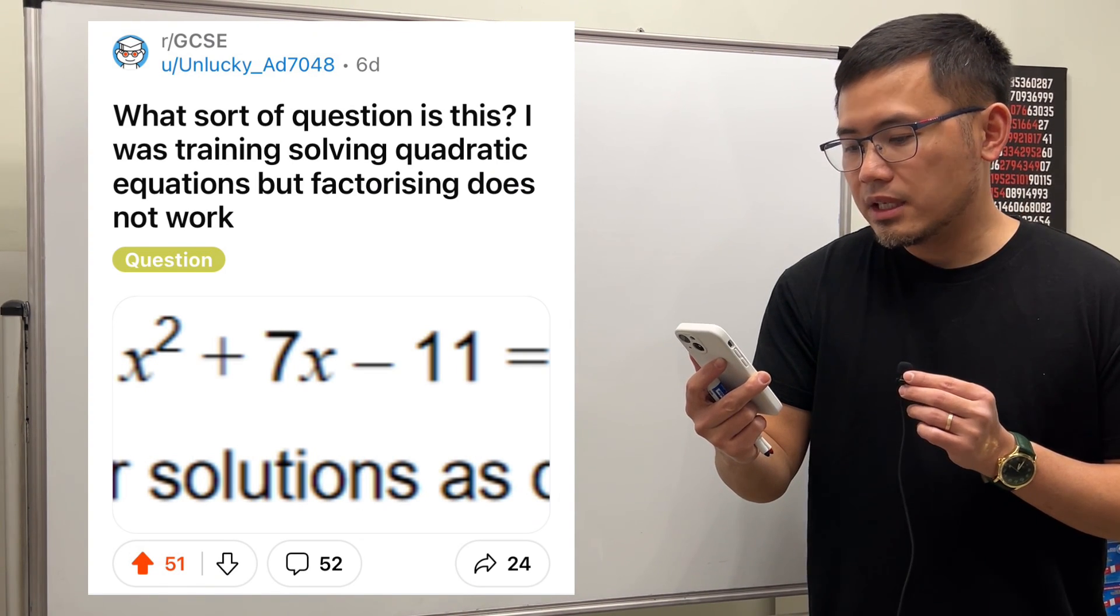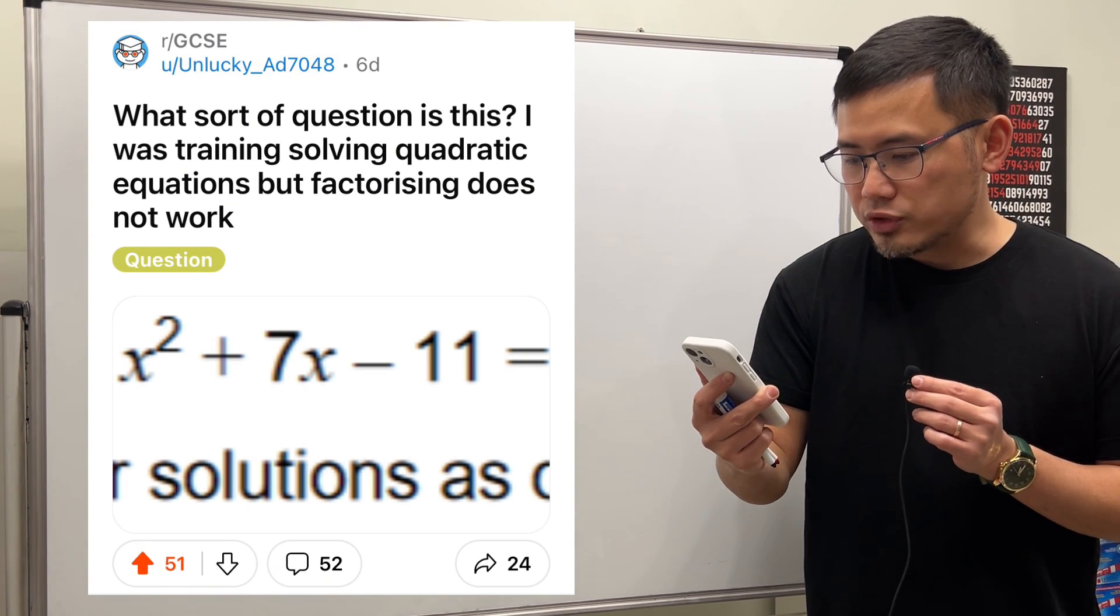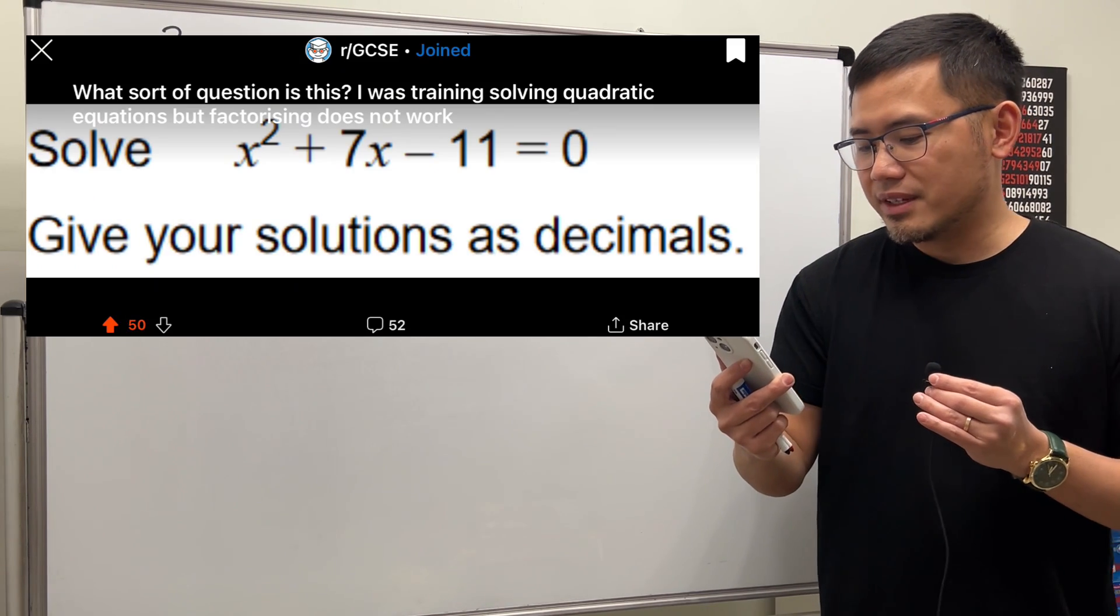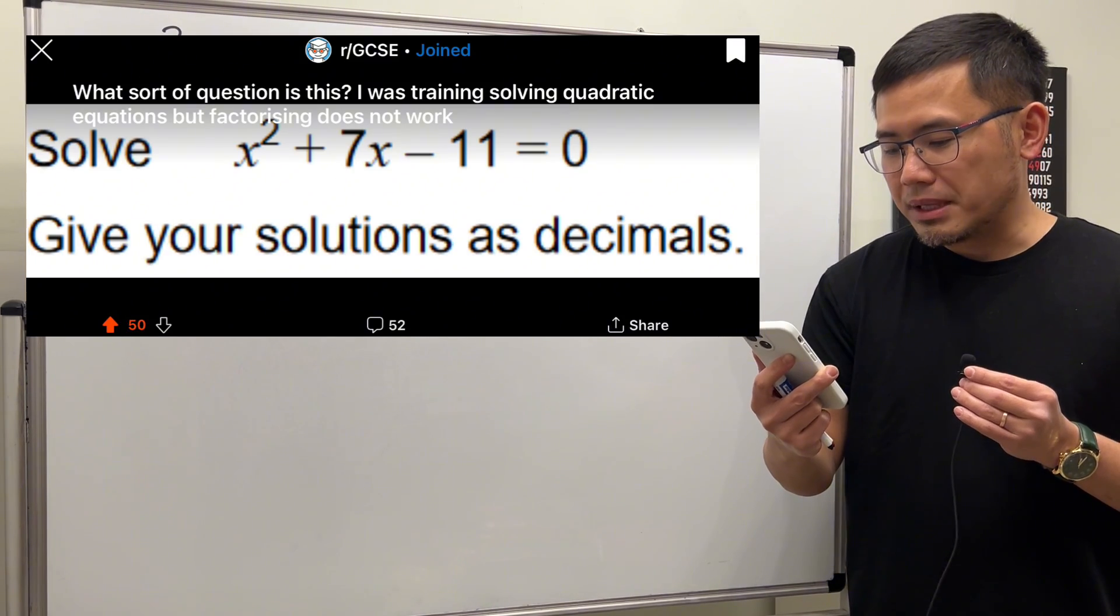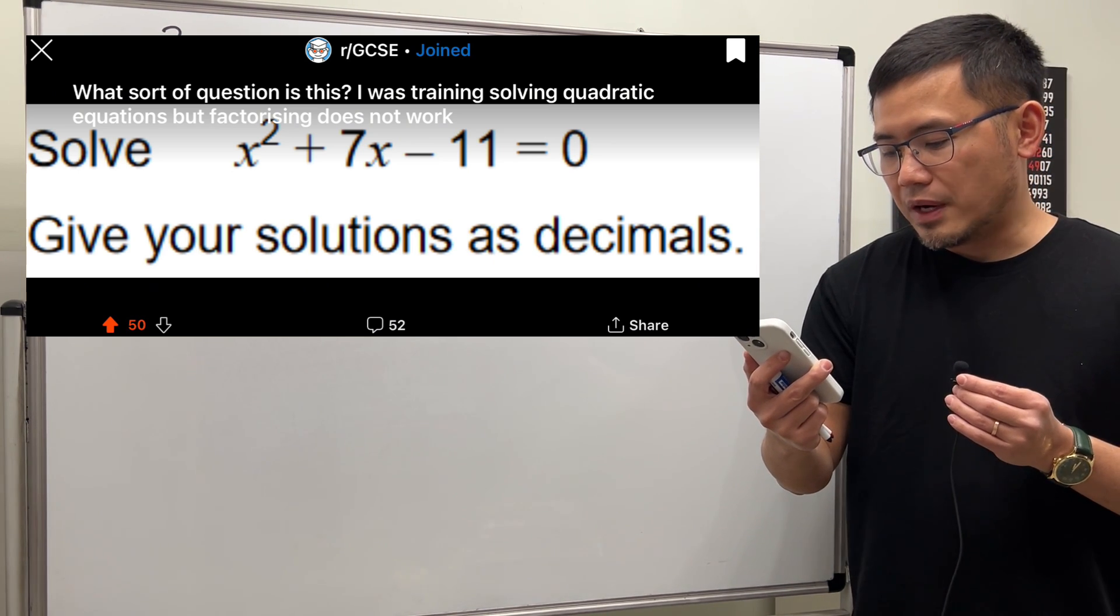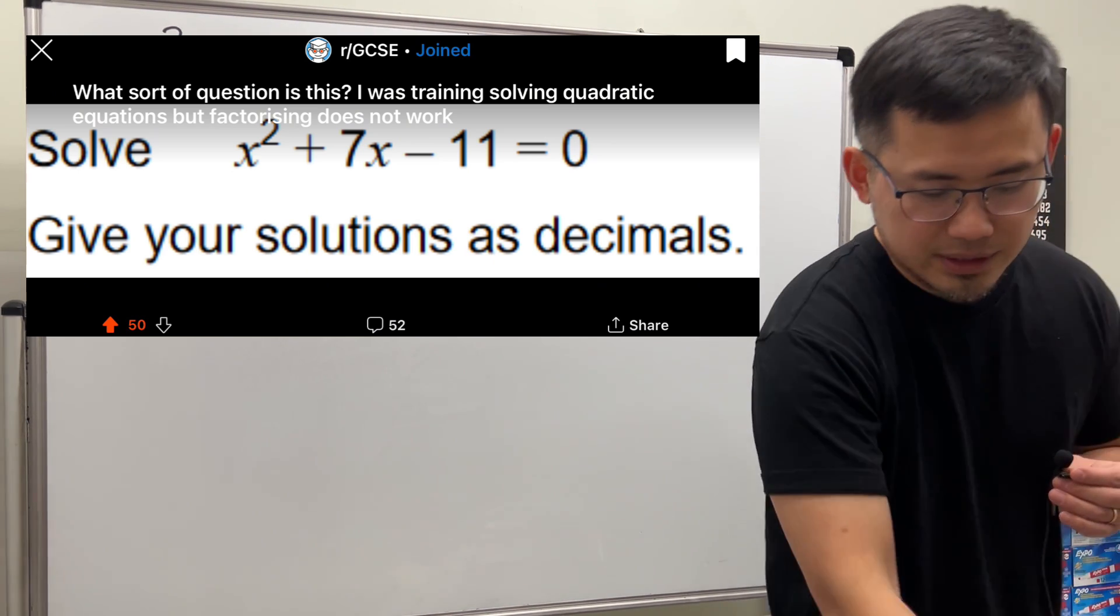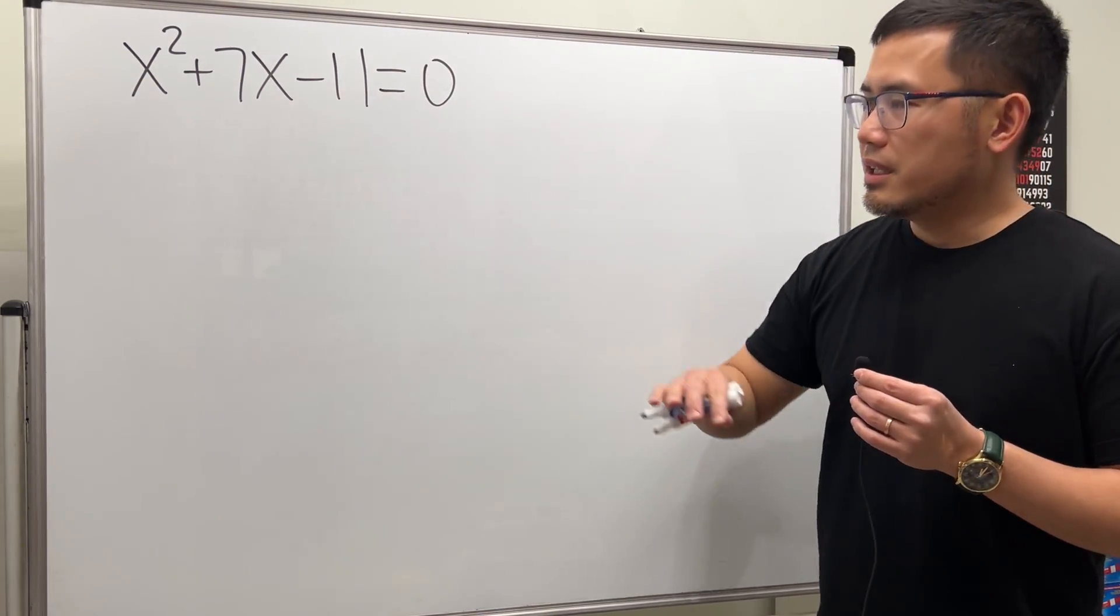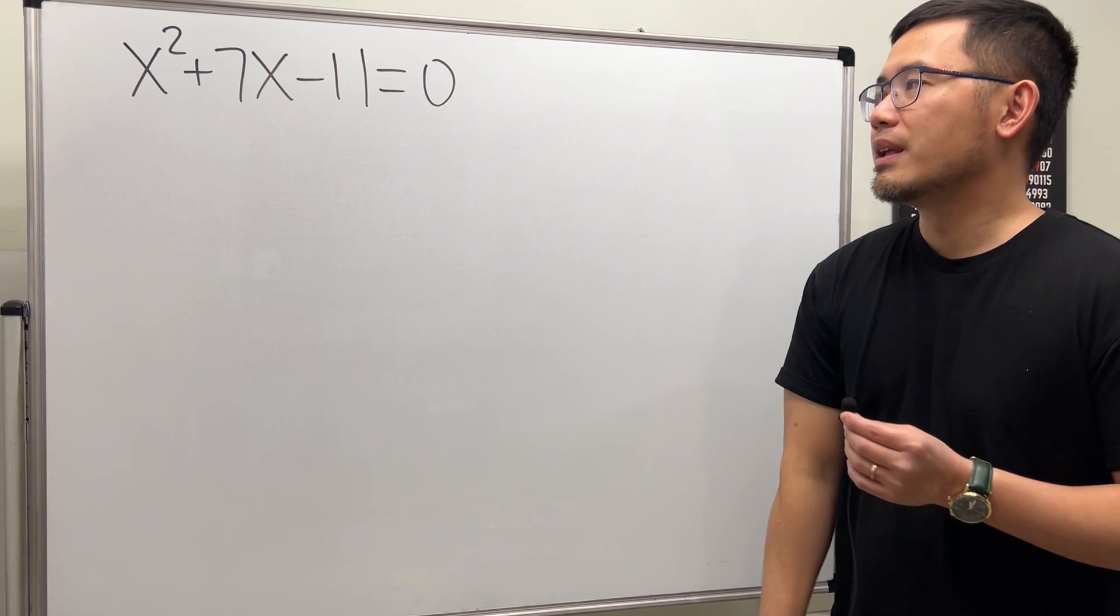What sort of question is this? I was training solving quadratic equations, but factoring does not work here. We have the quadratic equation x² + 7x - 11 = 0 and we are going to give our answers in decimals. So let's take a look. This quadratic equation, you're right, it's not factorable. So what do we do?